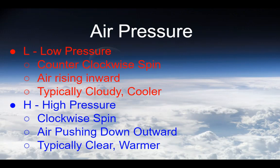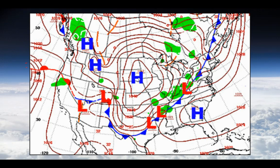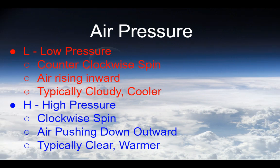There are two different types of pressure we see on weather maps: areas of low pressure and areas of high pressure. Low pressure has a counterclockwise spin — hurricanes are areas of low pressure, with air rising inward — and is usually associated with cloudy, cooler days. High pressure has a clockwise spin, the air is pushing down, which prevents clouds from forming. High pressure is usually associated with clear and a little bit warmer days — remember it as 'high pressure, happy days.' Low pressure is typically cloudy and cooler.